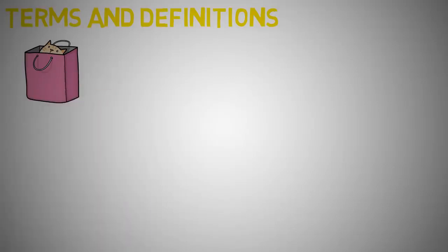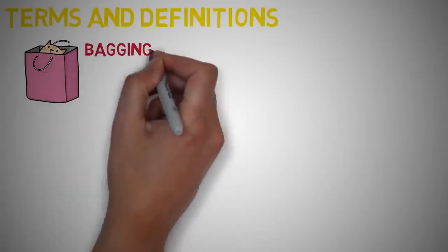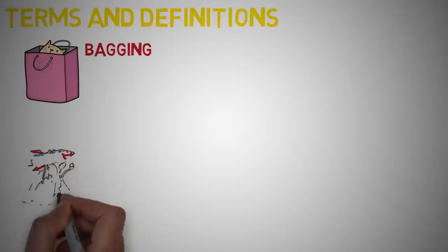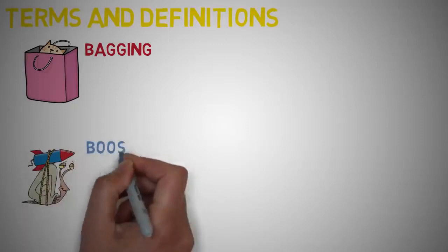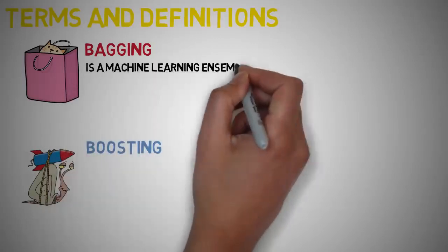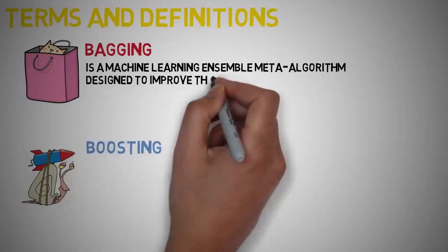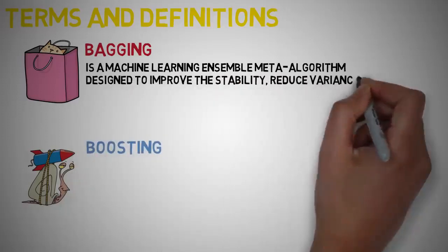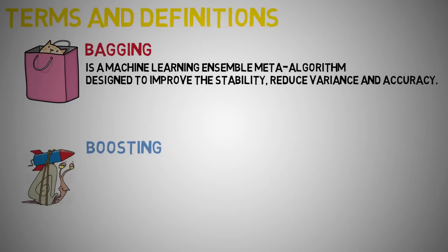Before we end the lecture, let's take a look at some terms and definitions that you might come across such as bagging and boosting. Bootstrap aggregating is also known as bagging, which is a machine learning ensemble method algorithm designed to improve the stability and accuracy of the machine learning algorithms used in statistical classification and regression. It also reduces variance and helps to avoid overfitting.